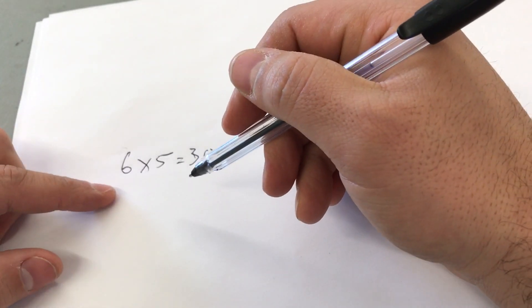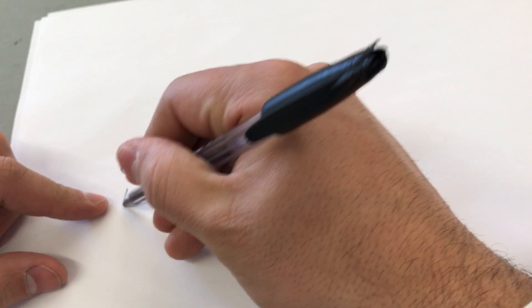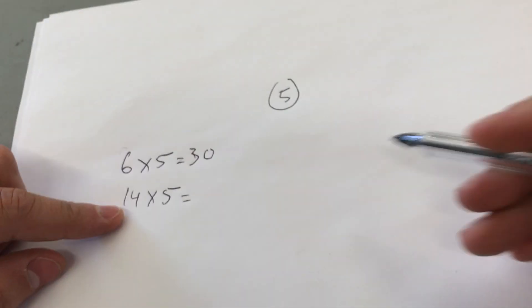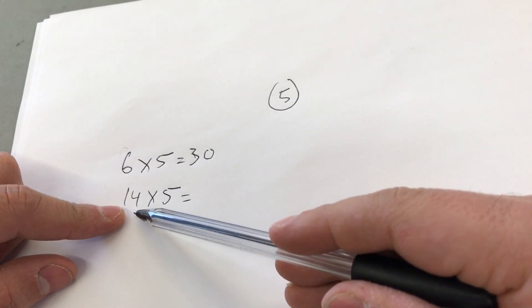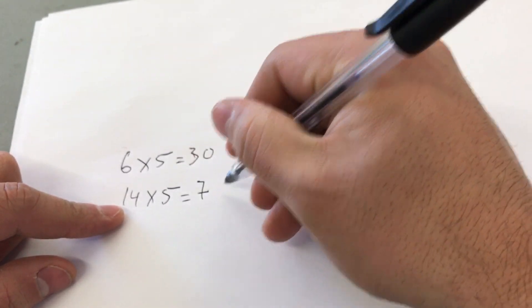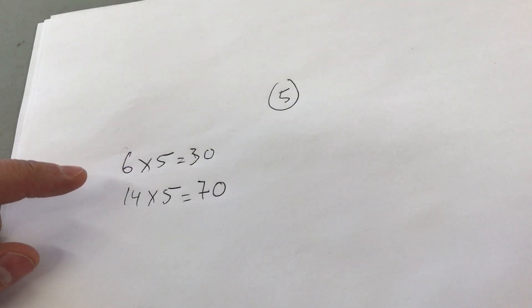So let's work our way to a bigger number. Let's say we had 14, this is a two-digit number, times 5. Once again, we're going to take the non-5 number, which is 14. We're going to cut it in half, which makes 7. We're going to put the 7 right there and then just add a 0 and there's your answer.